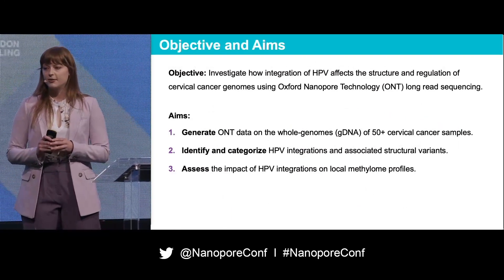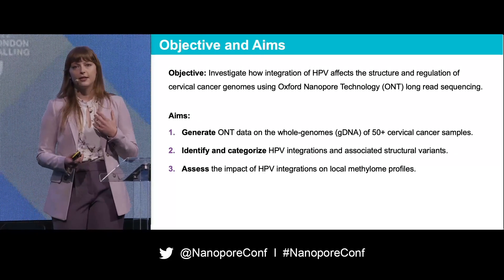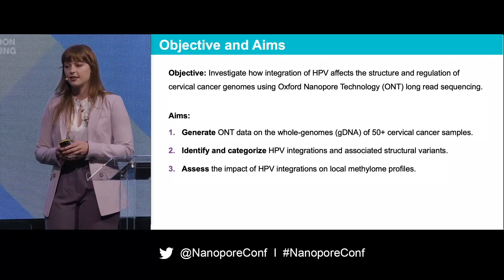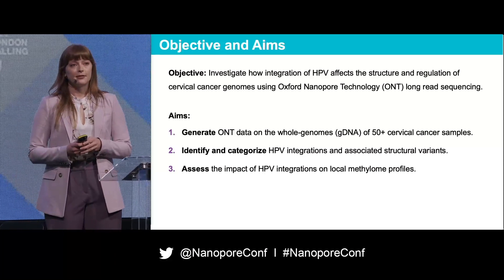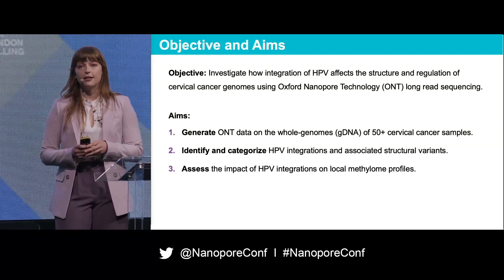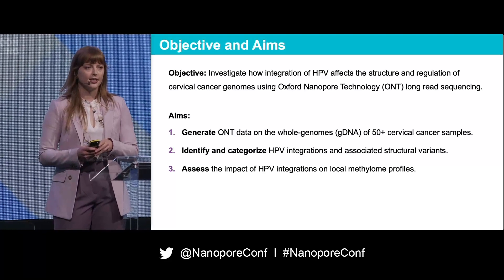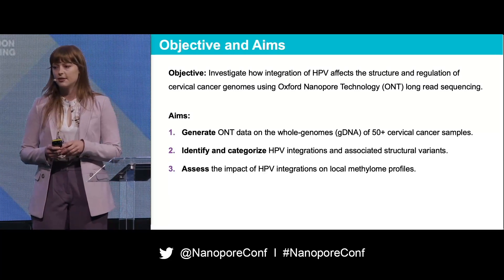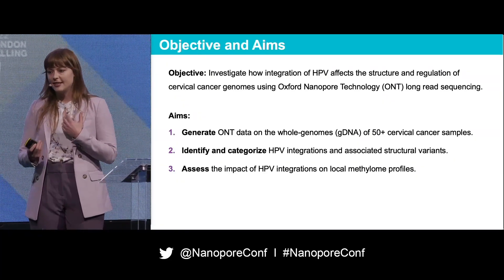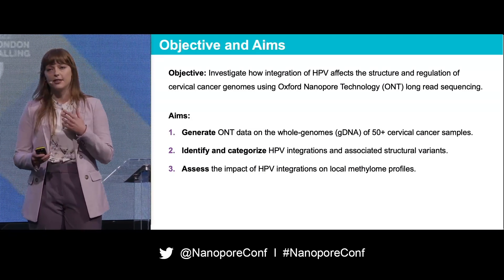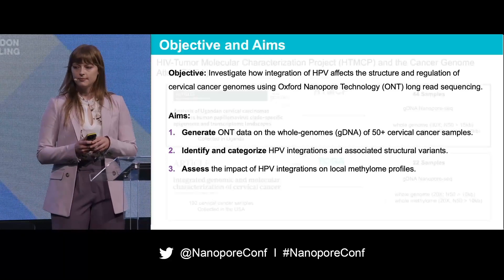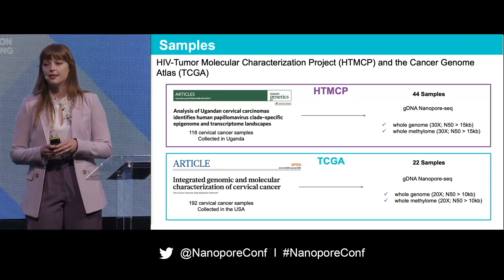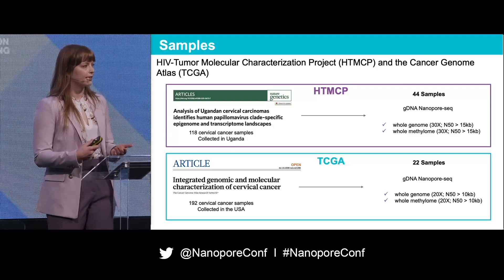The objective of this project is to investigate how integration of HPV affects the structure and regulation of cervical cancer genomes, and we're using Oxford Nanopore technology to do this. Our aims are first to generate nanopore data on the whole genomes of 50 plus cervical cancer samples, then to identify and characterize the associated structural variants of these integration events, and finally to assess the methylation profiles of the HPV integration. This study will be primarily looking at cervical cancer samples from two cohorts — one collected in Uganda and another collected in the USA.